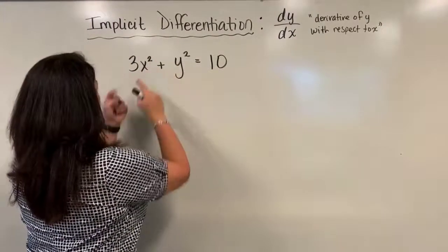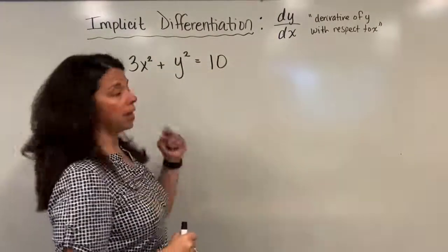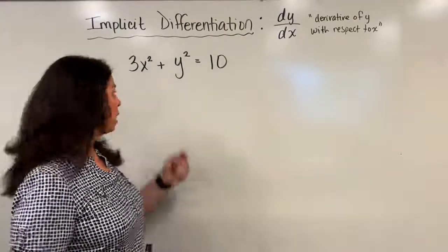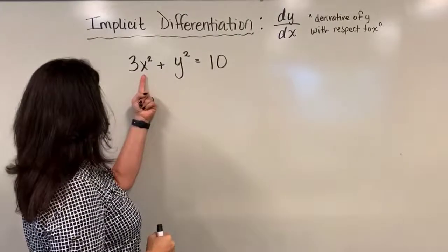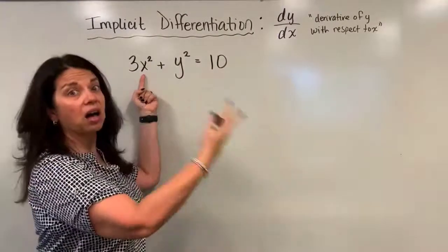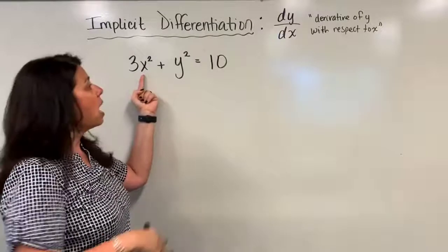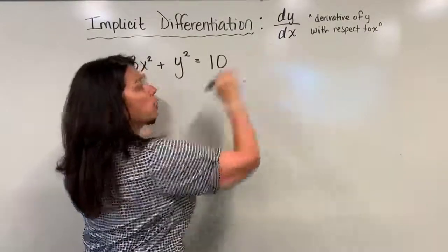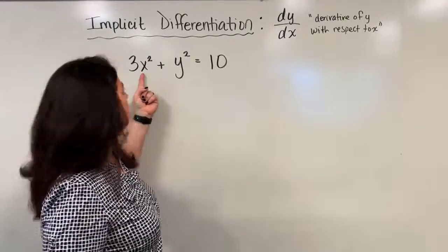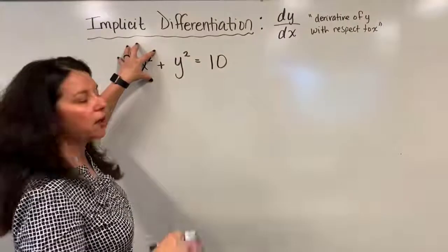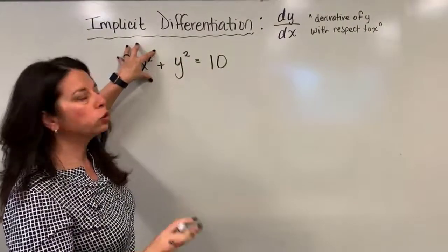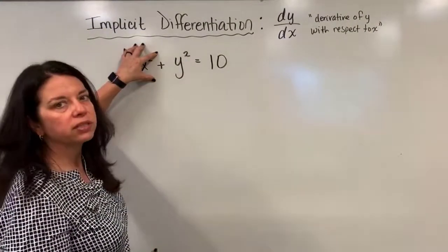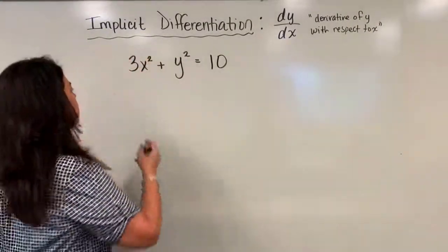I come to this first term and I say I want to find the derivative of 3x squared. Luckily I'm taking the derivative of something involving an x, and I'm going to take the derivative with respect to the same x. So I'm going to find the derivative like usual. Using the power rule, 3x squared's derivative is simply 6x.